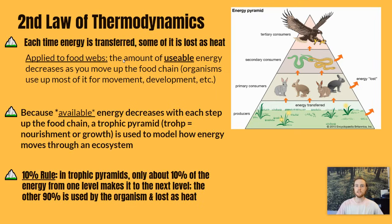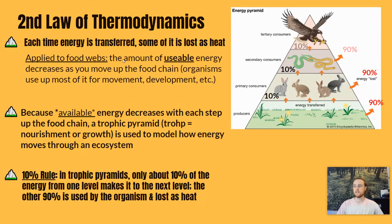The 10% rule reminds us that only about 10% of the energy from one trophic level makes it to the next; the other 90% is lost as heat while the organism uses that energy for all the processes it needs to fuel. Looking at this diagram: from the producers, only about 10% of the energy moves on to the rabbits — the first level to consume the grass — and 90% is lost as heat. Then onto the snakes: another 10%, 90% lost as heat. The same applies for the top predator.